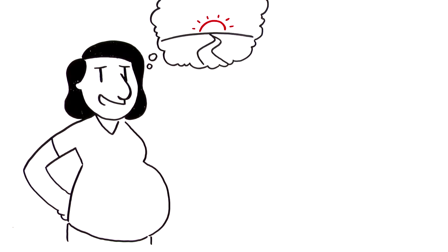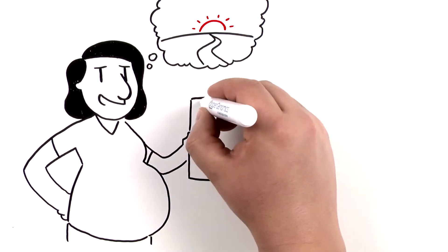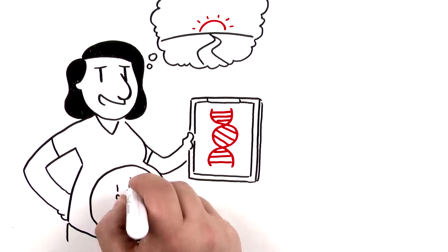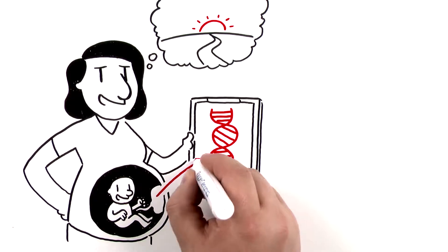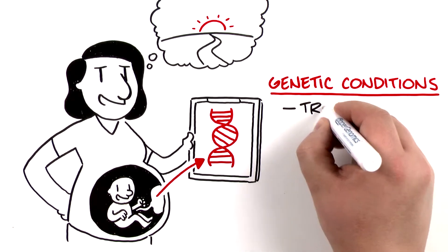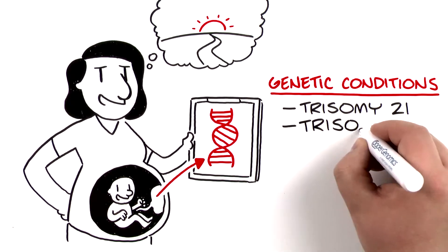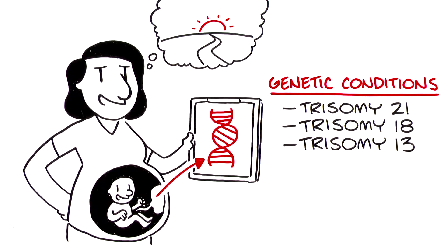What if there was a way to get a little more peace of mind, to get insight and information at the genetic level about your baby's risk for developing genetic conditions such as trisomy 21, trisomy 18 or trisomy 13 without using invasive, sometimes risky procedures?